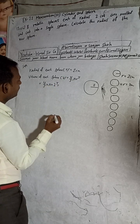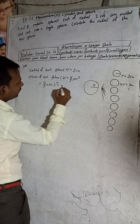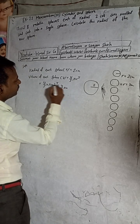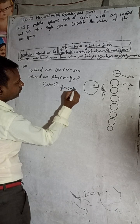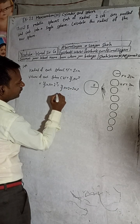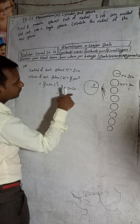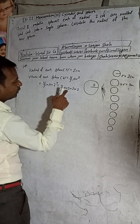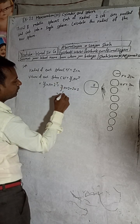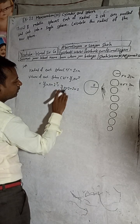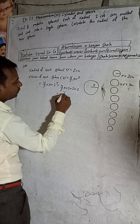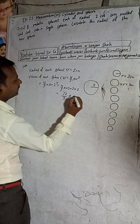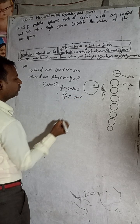So that gives us 4/3 π into 2 into 4 into 2, which equals 32π/3 cm³. So the volume of each sphere is 32π/3 cm³.